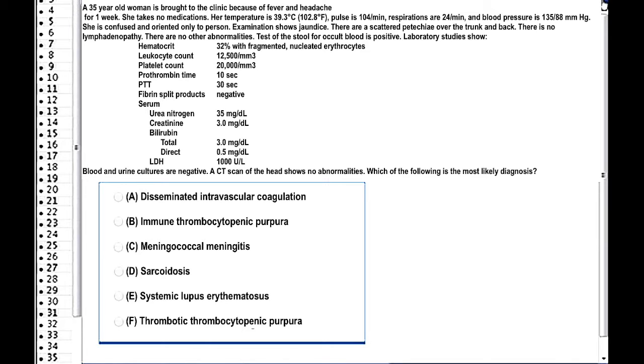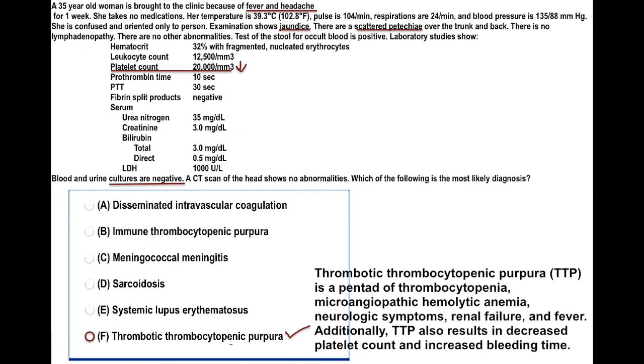Okay, the correct answer here is F: Thrombotic Thrombocytopenic Purpura — TTP.